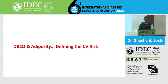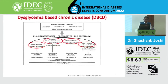The first part is DBCD. Jeffrey Mechanic always talks about DBCD and adiposity and defining the cardiovascular risk. It's all about dysglycemia-based chronic disease now. In stage 1, it's molecular at insulin resistance. Stage 2 is biochemical and cardiometabolic at prediabetes. Stage 3 is all about biochemical diabetes. Stage 4 is all about complications, which are vascular.